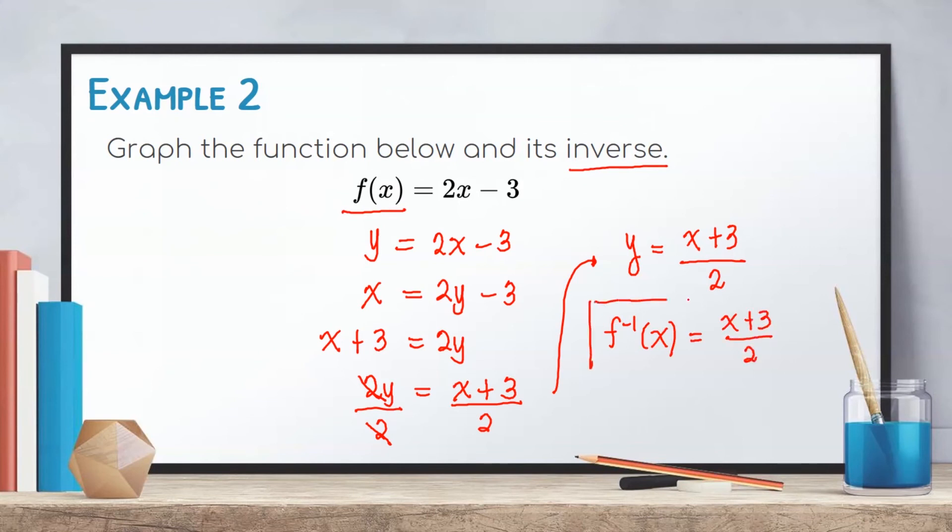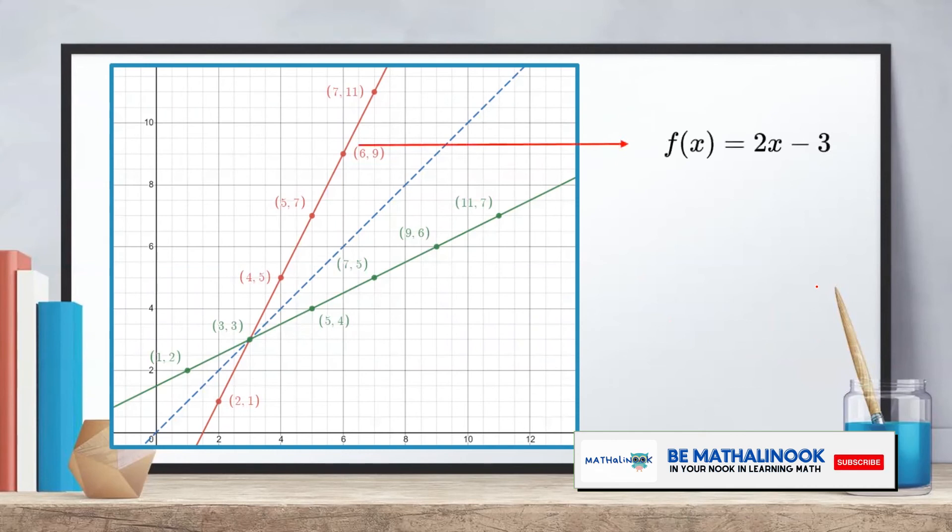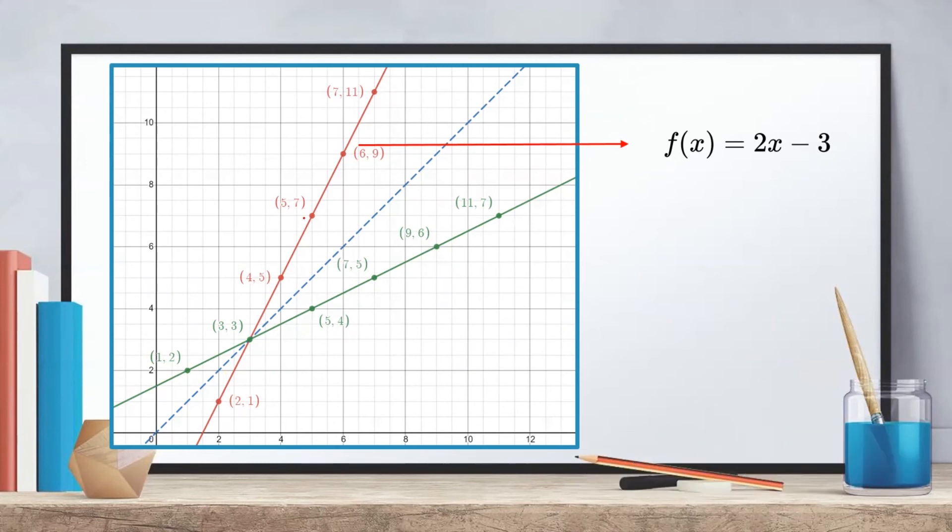Therefore, we need to graph the given function f(x) and its inverse (x plus 3) all over 2. This is the graph of f(x) is equal to 2x minus 3 with points (2, 1), (4, 5), (5, 7), and (7, 11).